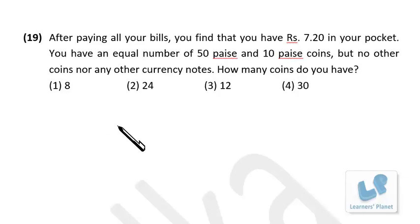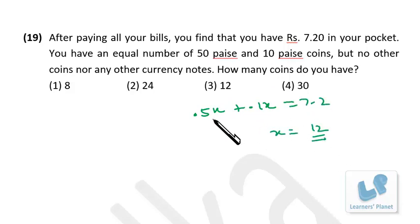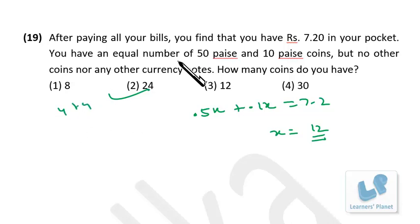After paying your bills you have ₹7.20 in your pocket with equal numbers of 50-paisa and 10-paisa coins and no other currency. Let x = number of each coin type. Then 0.5x + 0.1x = 7.2, so 0.6x = 7.2, x = 12. So 12 fifty-paisa coins and 12 ten-paisa coins — 24 coins total.